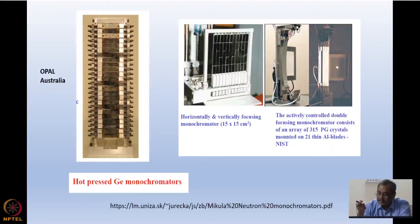You can see they are actively controlled double focusing monochromators consisting of an area of 315 pyrolytic graphite crystals. This is at NIST USA. Monochromators are possibly a single most very important component in our beam path.